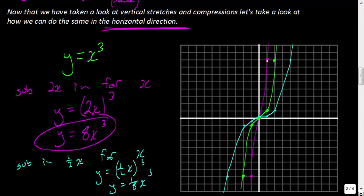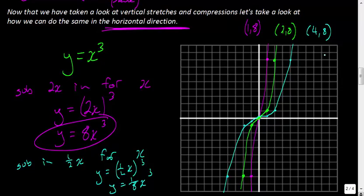What I'm hoping you'll notice is the ordered pairs. Let me highlight our original function. This ordered pair was at (2, 8). When I put a 2 value in here, what happened in the horizontal direction? It got halved — that x value is now at (1, 8). And what happened for the blue function when I put in ½? It has actually been multiplied by 2 — that point is now at (4, 8).